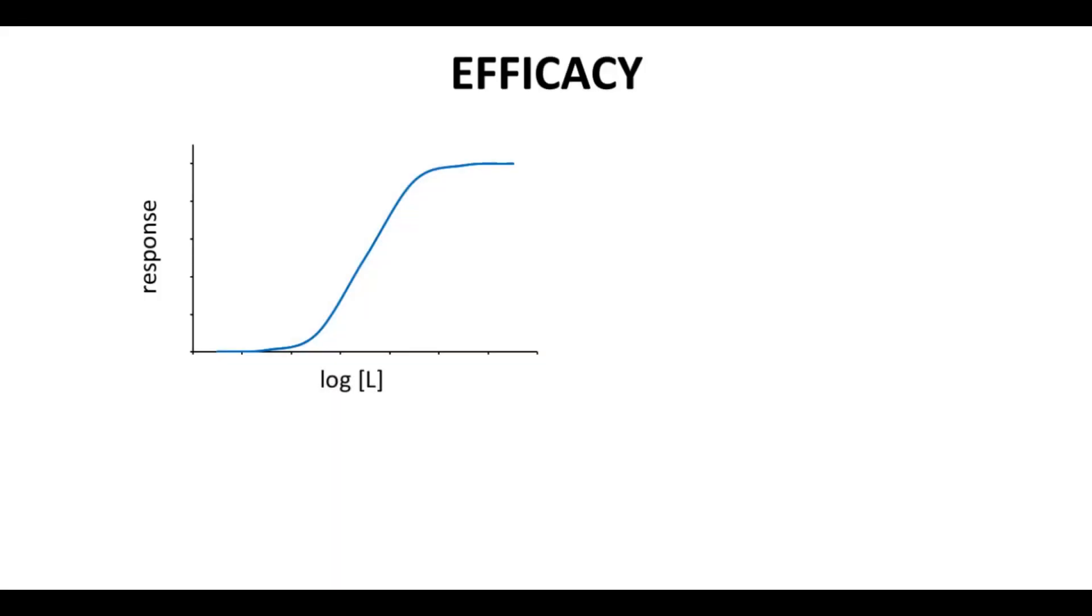Let's look at a response versus log ligand curve for a full agonist. We can read the potency of this molecule off of our x-axis. The y-axis gives us the response.